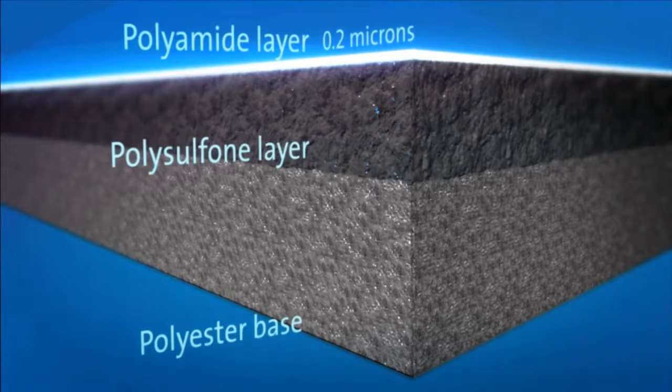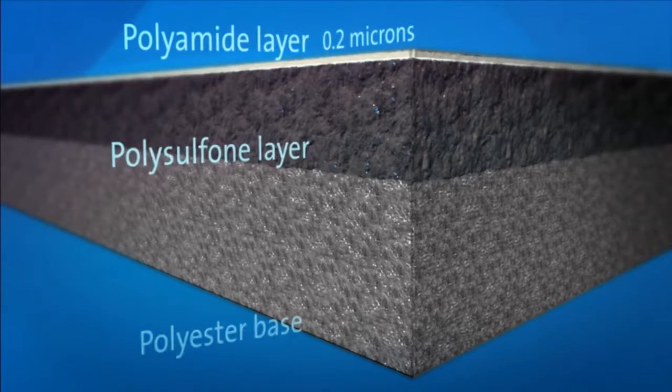The polysulfone layer strengthens the very thin barrier layer. It is the barrier layer that removes nutrients, chemicals, bacteria, and viruses from the water.